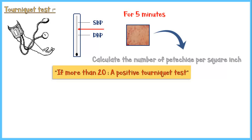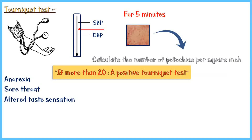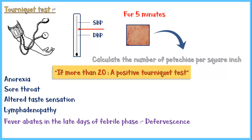In addition, the patient may have anorexia or loss of appetite, sore throat, altered taste sensation, and lymphadenopathy. As the patient reaches the late days of the febrile phase, fever starts to drop — a process known as defervescence, due to the cessation of viremia. However, some patients may show warning signs of progression into severe dengue around the time of defervescence.